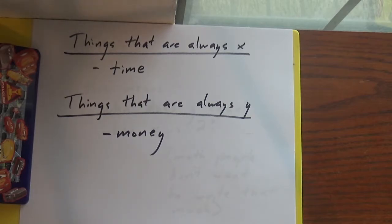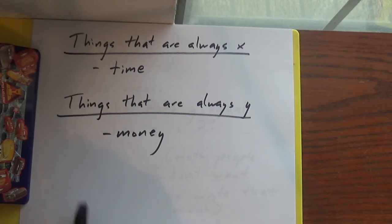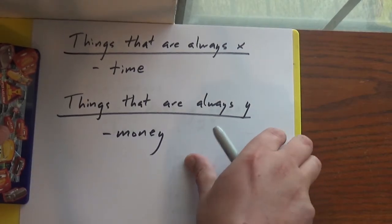Things that are always x: time. Time is always x. If it's time, it's x. We can't make it tomorrow or yesterday. We don't have control over time. Things that are always y: money. Money always depends on how many things we're buying and selling and whatever.